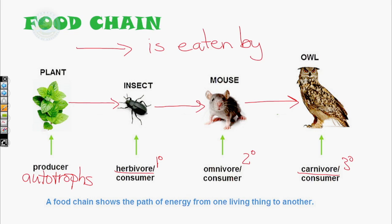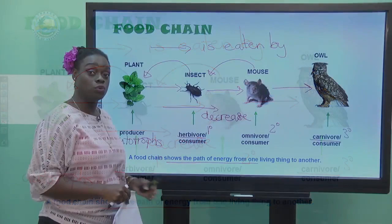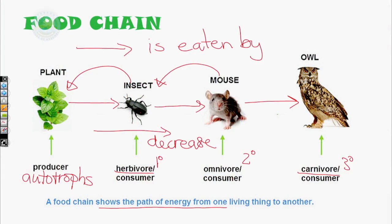A food chain is an unbroken link, not usually longer than five or six organisms, and it shows the path that energy takes from one organism to the next. There is a decrease in energy flow as you move down a food chain. For example, the owl will not get all the energy from the mouse, because the mouse uses energy to grow, find a mate, and find food as it survives. So energy decreases as you go down a food chain.